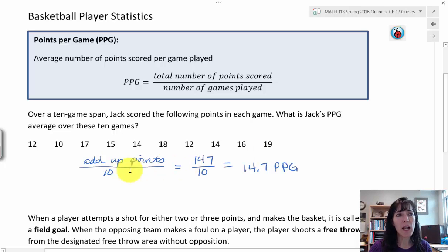For Jack, I added up all of his points and I got 147, and then I divided that by 10 because that was in 10 different games. You can also count 1, 2, 3, 4, 5, 6, 7, 8, 9, 10 - 10 games. Then I divided that and got 14.7 points per game, PPG.